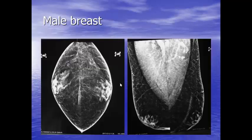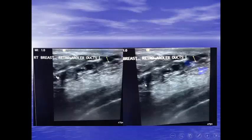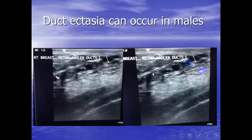Here is a male breast — this male presented with breast discharge. Tubular dense structures are seen retroareolar. Can a male get ductectasia? Yes, because males have ducts. This shows dilated ducts with thickened periductal mastitis — ductectasia with periductal mastitis. So ductectasia can indeed occur in males.